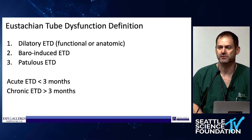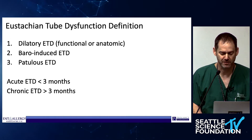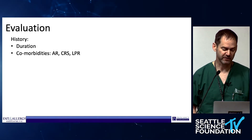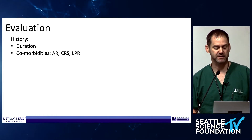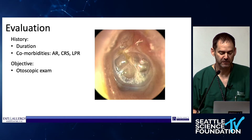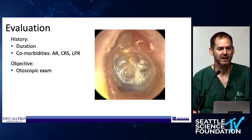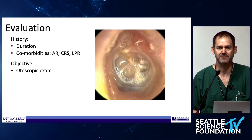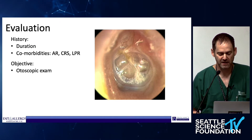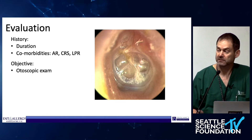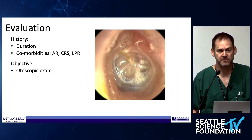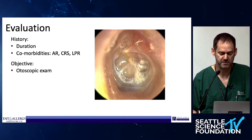Whether it's acute versus chronic — these are all important things to document in your notes to try to get approval. With the history, duration is key. Comorbidities: allergic rhinitis, CRS, laryngopharyngeal reflux. Really look in the ear. As a rhinologist, I do have a couple otoscopes in my clinic, but I tend to use the 0 or 30 degree endoscope to get beautiful images. I'll take a look in the external auditory canal to make sure there's no significant ear pathology. If there is, they're going to see one of my colleagues.